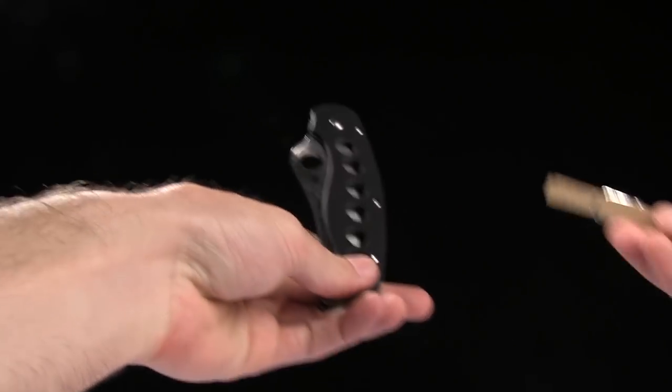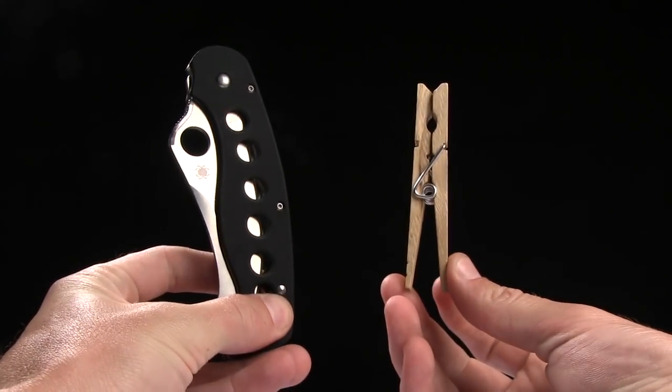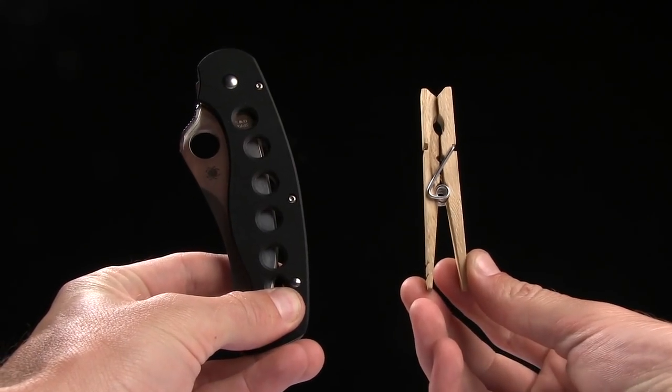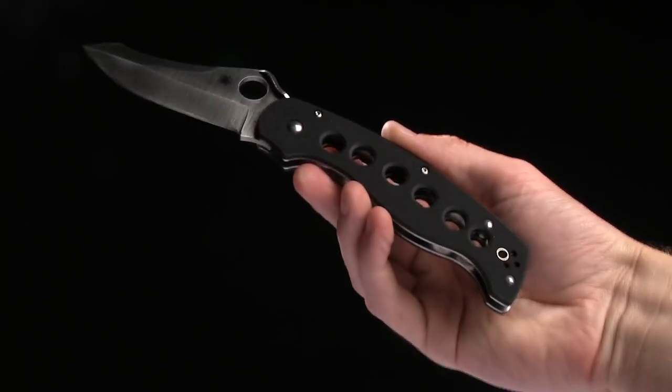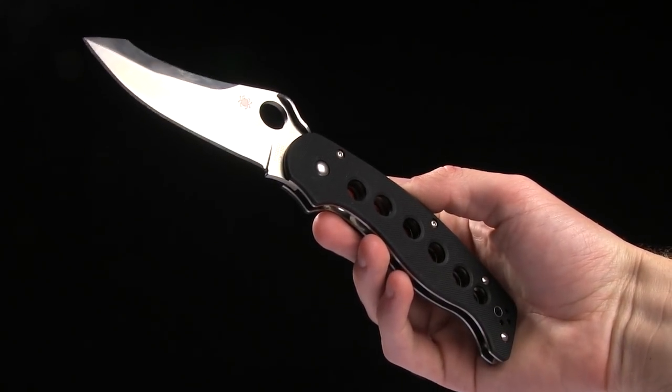It weighs 4.7 ounces. Here's your tactical clothespin for size comparison. Guys, go ahead and check this knife out and buy it at bladehq.com. This is the Spyderco ATR 2.